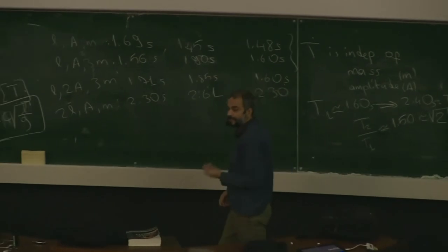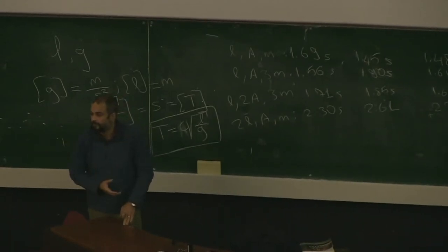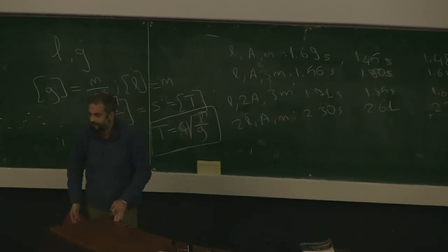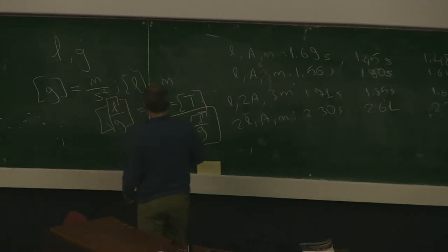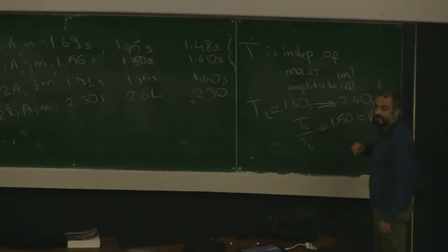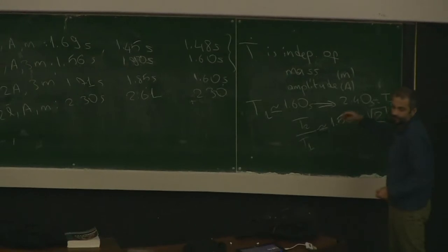Once we determine that T is independent of the mass and independent of the amplitude, we know that the period of the oscillation has to be equal to some constant C times square root of L over g. We experimentally observed the ratio of periods for two lengths differing by a factor of two, and found the ratio of periods was equal to square root of two within our experimental errors. The ratio of the lengths is also probably not exactly two, which is another source of error.